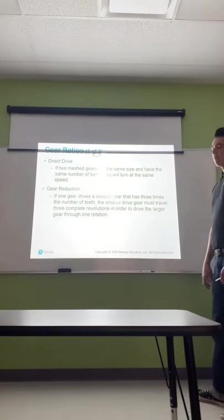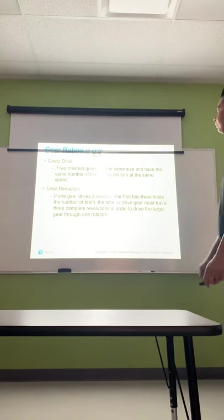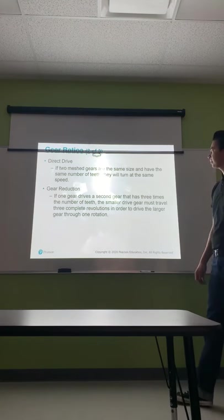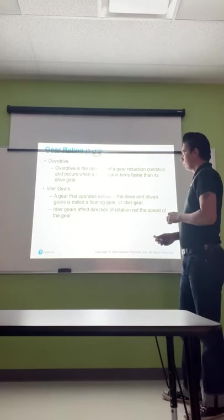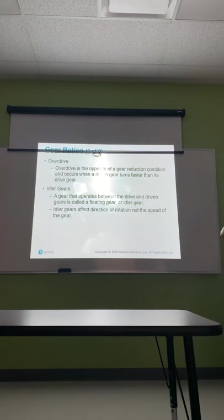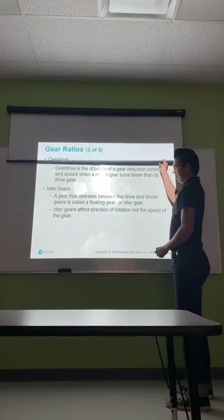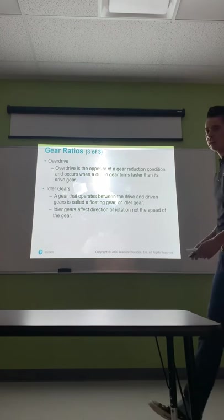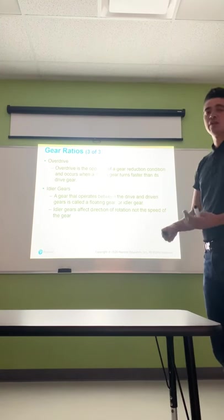Direct drive: if two meshed gears are the same size with the same number of teeth, they turn at the same speed. Most manual transmissions' fourth gear is your direct drive. Gear reduction: if one gear drives a second gear that has three times the number of teeth, the smaller drive gear must travel three complete revolutions to drive the larger gear through one rotation. Overdrive is the opposite of gear reduction — it occurs when a driven gear turns faster than the drive gear. An idler gear placed between drive and driven gears doesn't change the gear ratio; it only changes the direction of rotation.